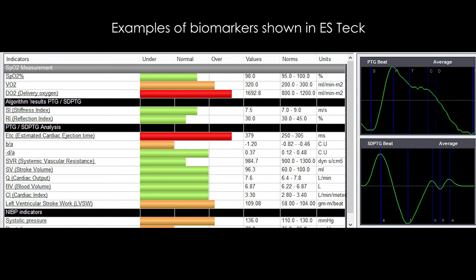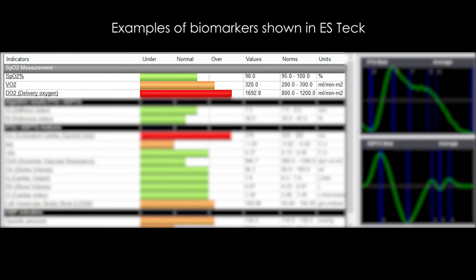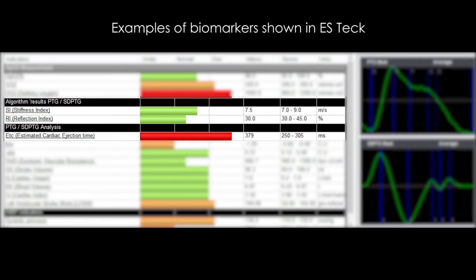This picture shows heart circulation and oxygenation. This part shows oxygen saturation, oxygen consumption and oxygen delivery. These measurements will give you a good insight into a person's oxygenation. The next part shows circulation. Stiffness of the aorta and the small and medium arteries give you information about the circulation.